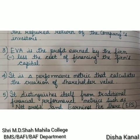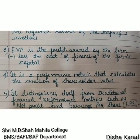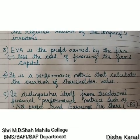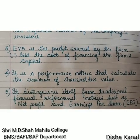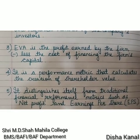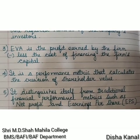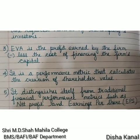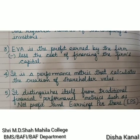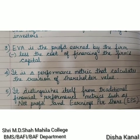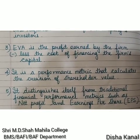When you raise capital you have to pay a cost for it. The cost may be related to the debt part or the equity part. So when you apply weights to the respective debt and equity proportions, you get the weighted average cost of capital.